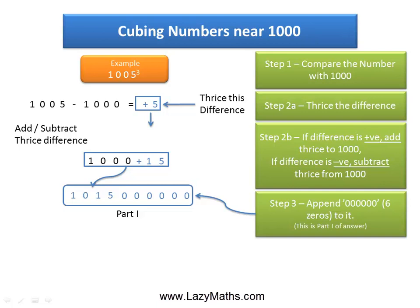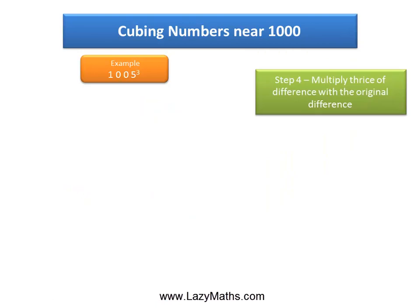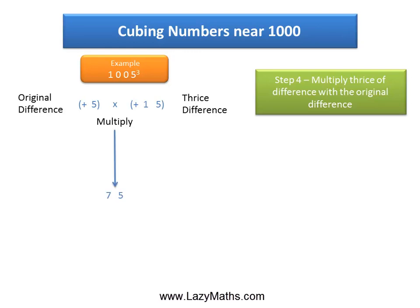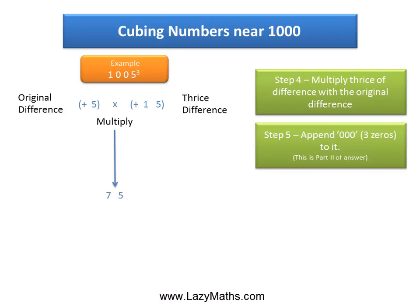For part 2, we go back to the original difference, which is positive 5, and take thrice the difference, which is positive 15, and multiply the two together. So 5 times 15 gives us positive 75. The next step is to append three zeros, multiplying 1,000 with 75, giving us 75,000. This becomes part 2 of the answer.